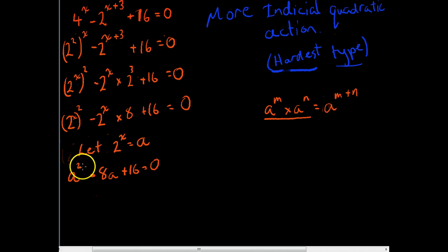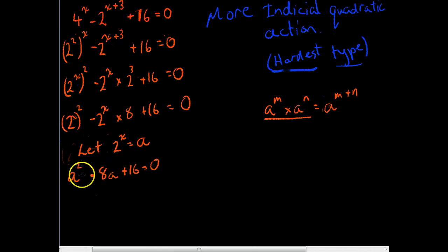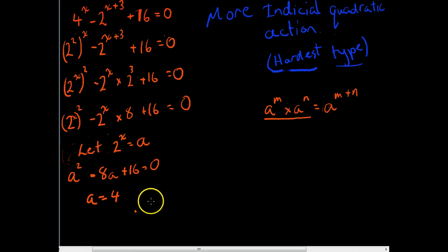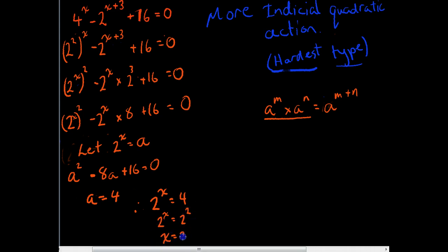So now we have a true quadratic: a squared minus 8a plus 16. You can solve this any way you want — quadratic formula, your class pad, or factorize it. In any case, you're going to end up with only one answer: a equals 4. If a equals 4, and 2 to the x equals a, that means 2 to the x equals 4, which means 2 to the x equals 2 to the 2, so x equals 2.